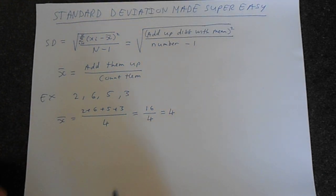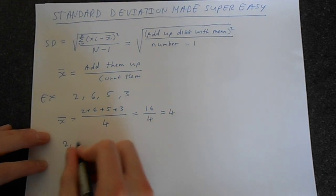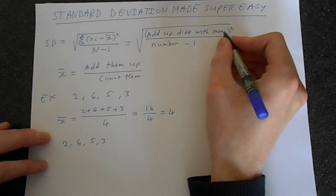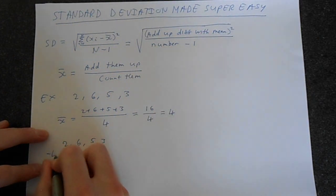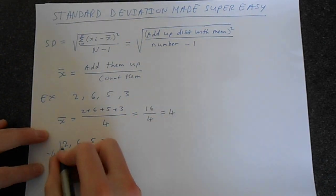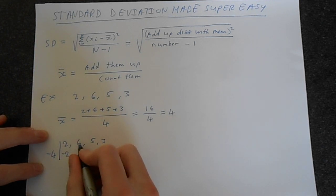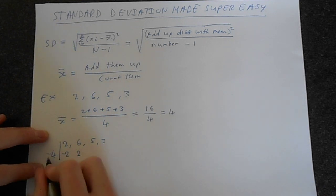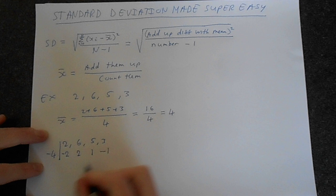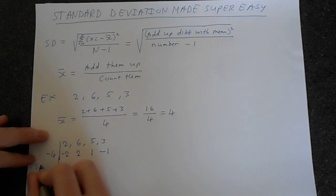Now let's do the standard deviation. So let's just write this out again. So we've got 2, 6, 5, and 3. And now we'll follow this instruction. So we want the difference with the mean. So we'll just put minus 4 here. So find the difference with the mean for each step. So we've got 2 minus 4 is minus 2. We've got 6 minus 4, that's going to be 2. 5 minus 4 is 1. 3 minus 4 is minus 1.